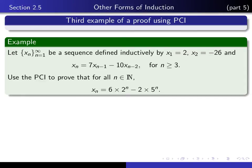Then if you replace n by 4, you get x_4 is 7x_3 minus 10x_2. And since you know x_3 and x_2, you can then get x_4. And continuing in that way, you can generate as many of the x_n's as you wish. It's a simple exercise using the principle of complete induction to show that these things define x_n for all natural numbers n.